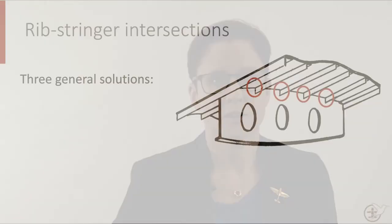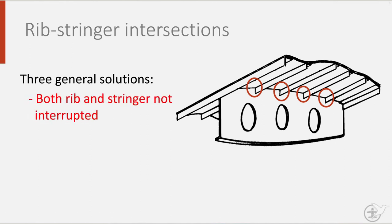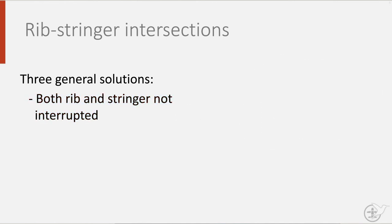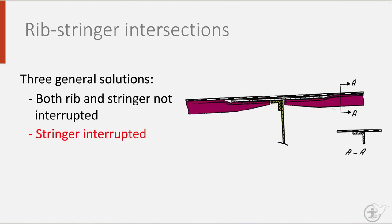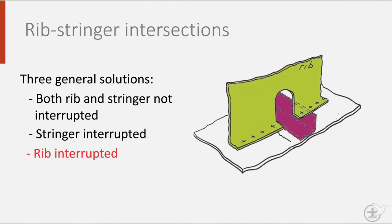As with fuselages, wing skin panels are also stiffened using stringers. As a result, rib-stringer intersections are unavoidable. One of three options are possible: first, interrupt neither, as shown here; secondly, the stringer is interrupted; and finally, the rib can be interrupted. The selection of what is most appropriate depends on the loads locally and its manufacturability.